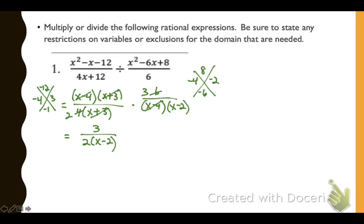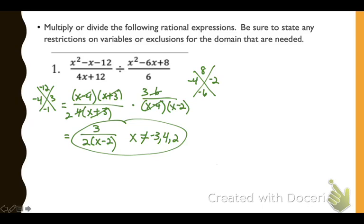Now we look at any values in the step before the last one that would make any expression in the denominator 0. We exclude negative 3 because that makes x plus 3 equal 0, and we exclude 4 and 2 because those make x minus 4 and x minus 2 equal 0. This is our final answer with the restrictions on x.